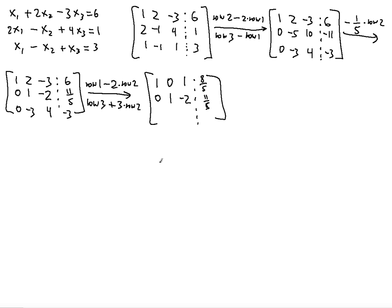For row 3 plus 3 times row 2: 0 plus 3 times 0 is still 0 — you're not disturbing the Gaussian work done on the first column, which stays intact. That's the beauty of Gauss-Jordan elimination. Negative 3 plus 3 times 1 is 0 — perfect. Then 4 plus 3 times negative 2 is 4 minus 6, which is negative 2. And negative 3 plus 33 over 5 is negative 15 over 5 plus 33 over 5, giving 18 over 5.